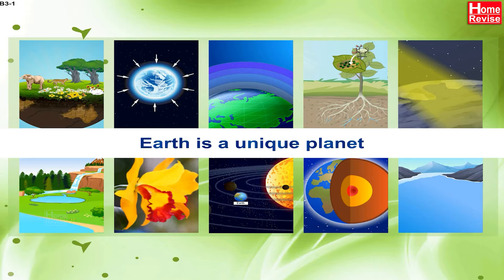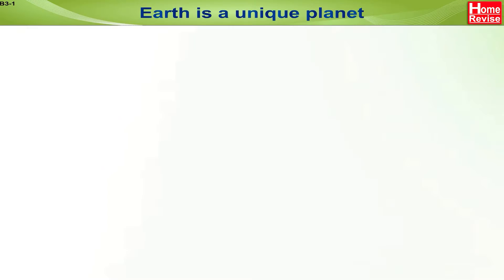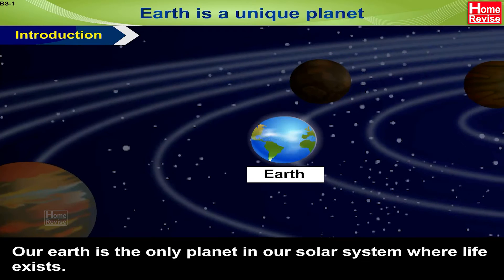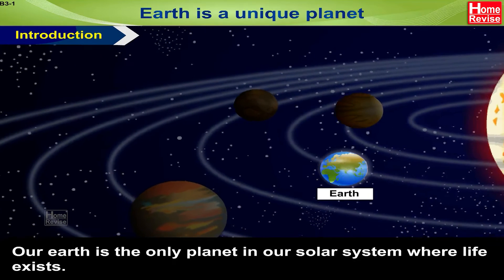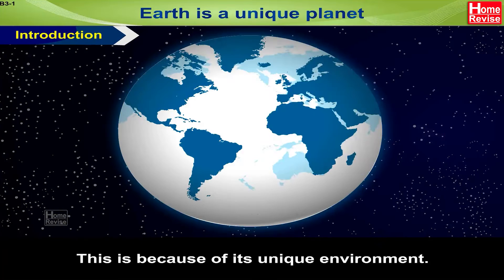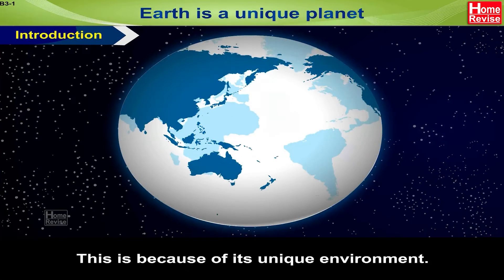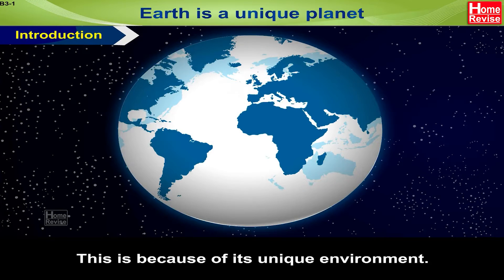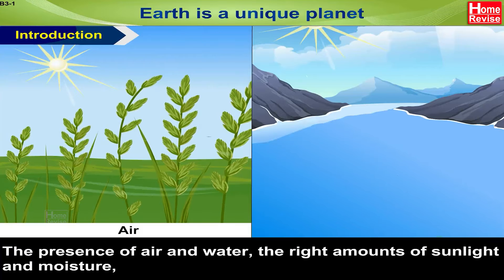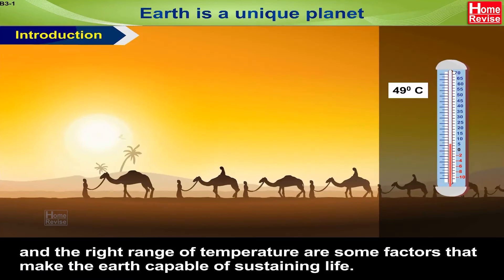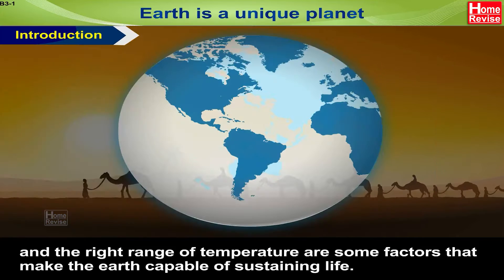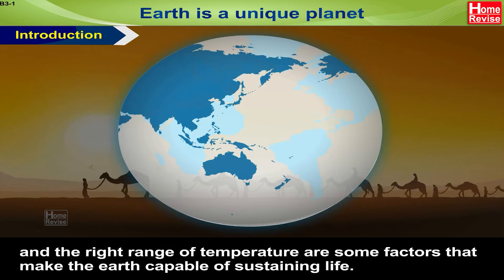Earth is a Unique Planet. Our Earth is the only planet in our solar system where life exists. This is because of its unique environment. The presence of air and water, the right amounts of sunlight and moisture, and the right range of temperature are some factors that make the Earth capable of sustaining life.